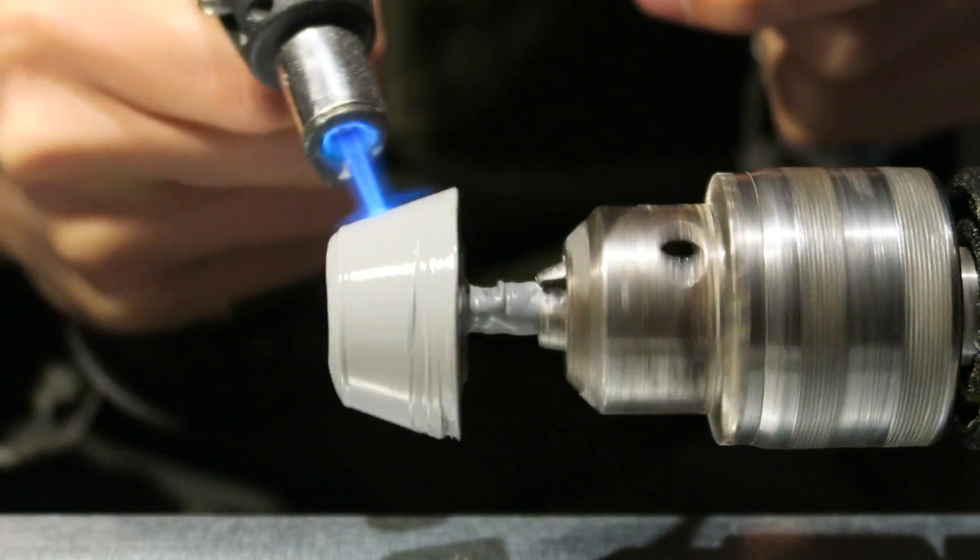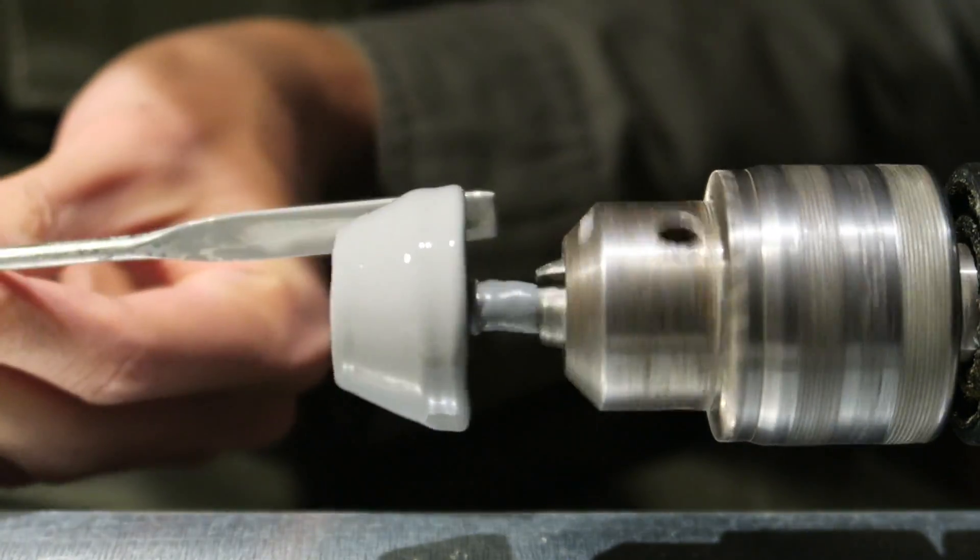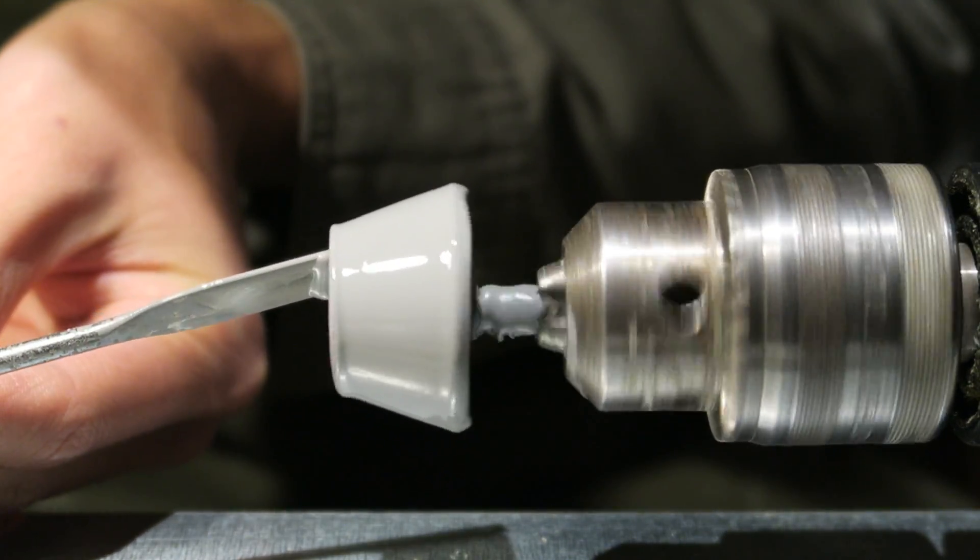Using this torch I can vary the temperature and do additive and subtractive sculpting to work the contours of the pieces.